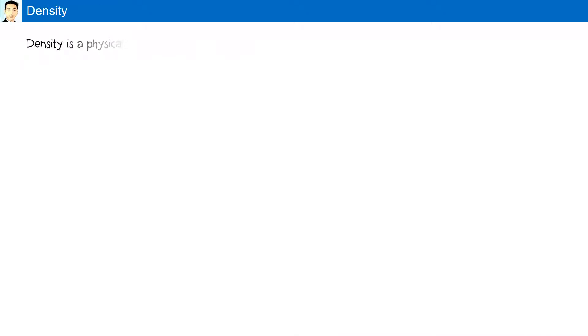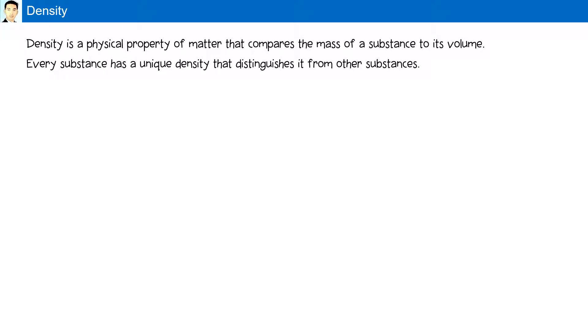Density. Density is a physical property of matter that compares the mass of a substance to its volume. Every substance has a unique density that distinguishes it from other substances. It can be used to identify a specific substance.